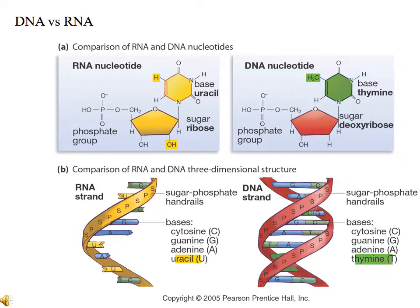DNA and RNA are both made up of nucleotides. A nucleotide is made up of a phosphate group, a sugar, and a base. The RNA nucleotide is identical to the DNA nucleotide, except that uracil is present in RNA rather than thymine, and the sugar ribose in RNA is deoxyribose in DNA. In addition, RNA is single-stranded while DNA is double-stranded. RNA will have the nucleotides cytosine, guanine, adenine, and uracil, whereas DNA will have cytosine, guanine, adenine, and thymine.